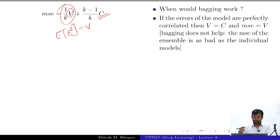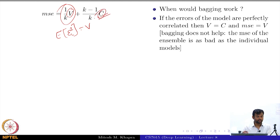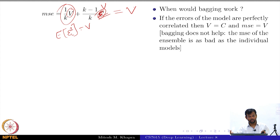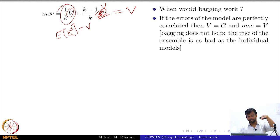If your classifiers are perfectly correlated, then C equals V. Substituting that in, the mean square error remains V — you get no benefit from bagging. But at the other extreme, where all errors are independent, your expected mean square error goes down from V to (1/K)·V. So bagging works when your K classifiers make independent errors, and gives no benefit when they are perfectly correlated.